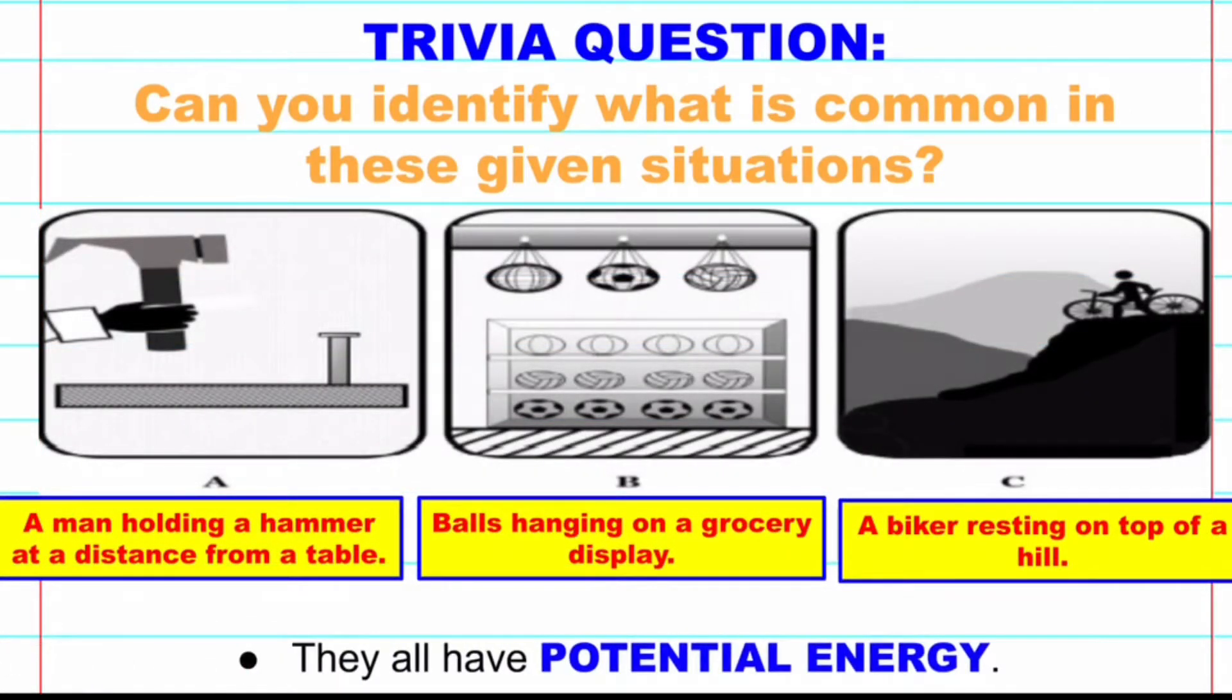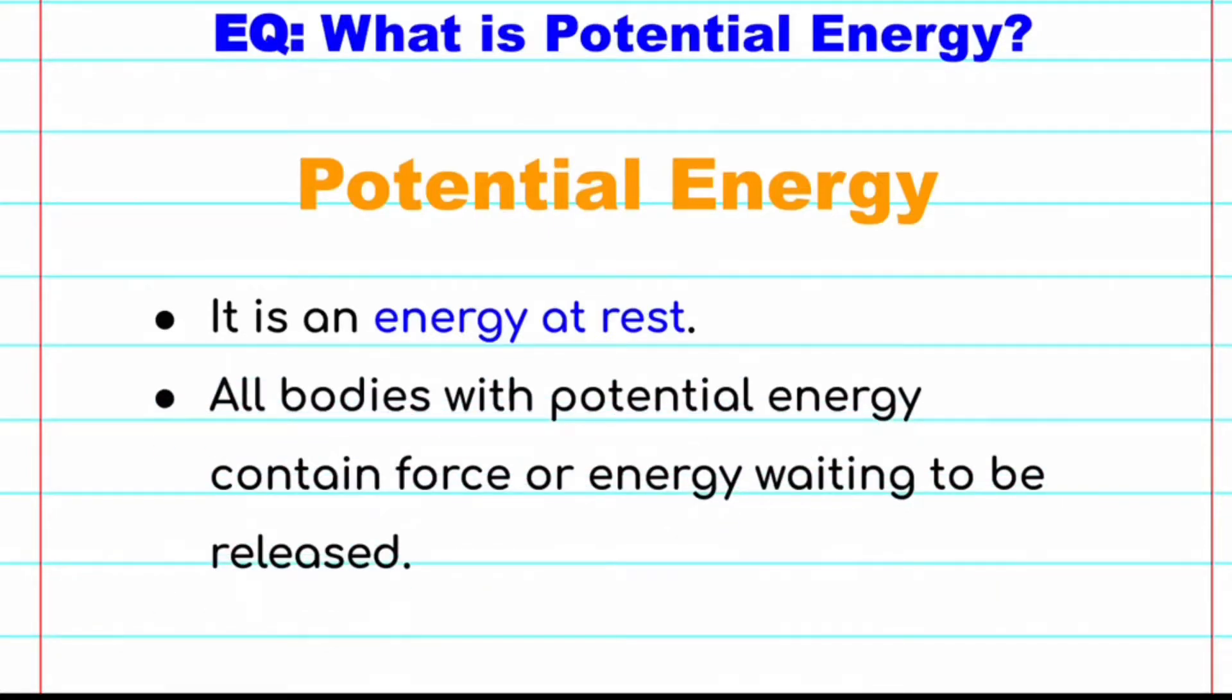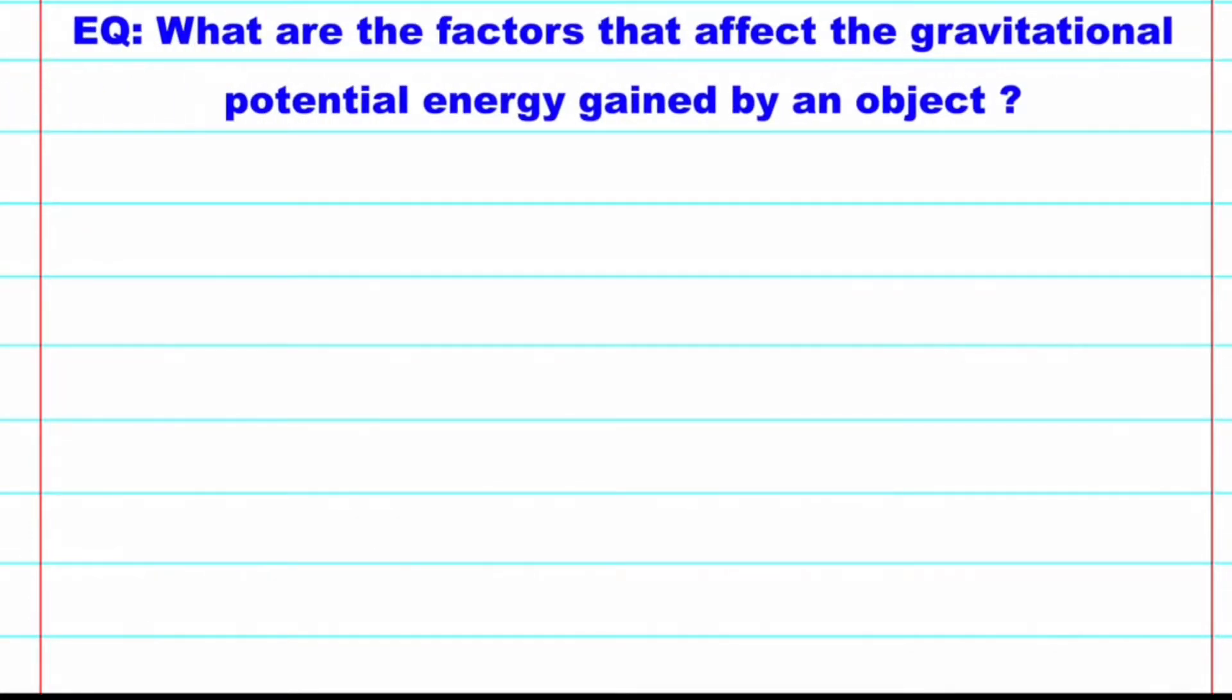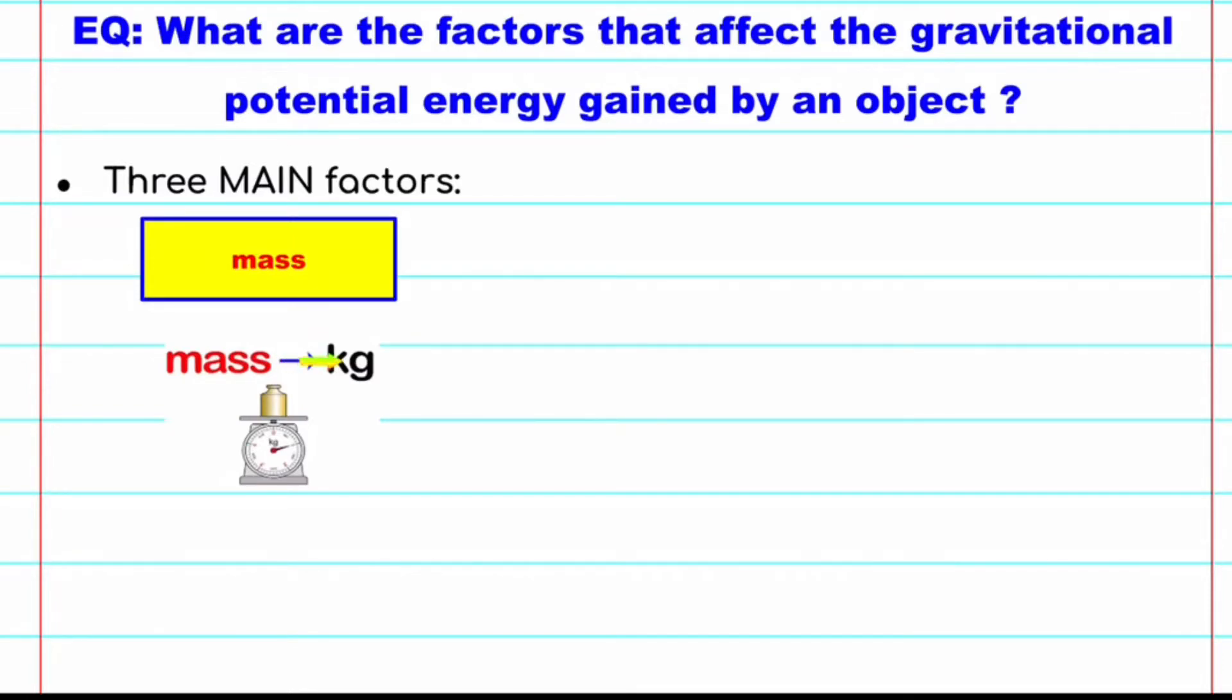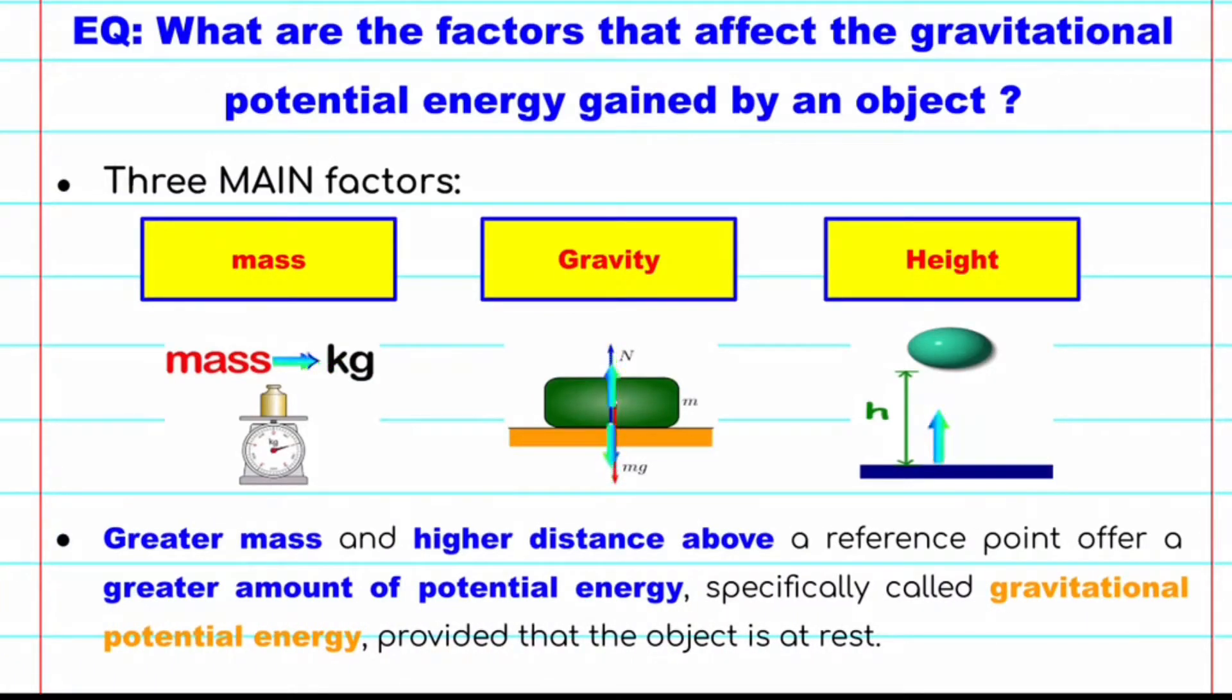Now, let's try to answer the first essential question: What is potential energy? Potential energy in physics is the energy at rest. All bodies with potential energy contain force or energy waiting to be released. Essential question number 2: What are the factors that affect the gravitational potential energy gained by an object? The three main factors are: First, mass. Second, gravity. And third, height. This means that greater mass and higher distance above a reference point offer a greater amount of potential energy, specifically called gravitational potential energy, provided that the object is at rest.